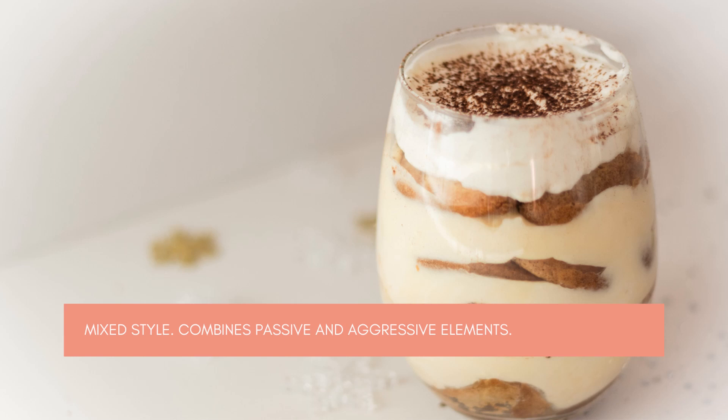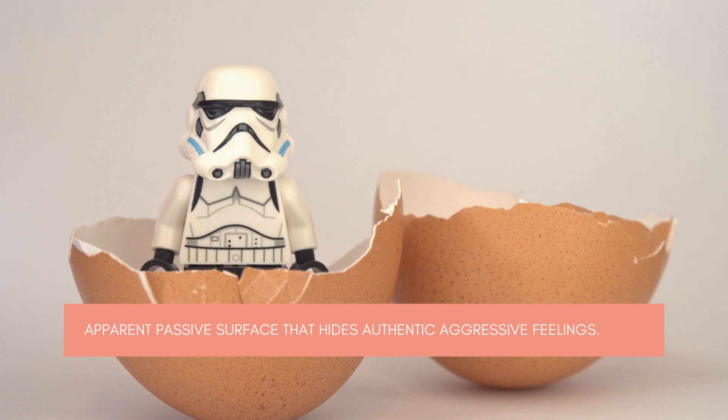This mixed style of communication combines elements from the passive and aggressive styles. The result is an apparent passive surface that is actually an attempt to hide authentic aggressive feelings. The person may experience emotions related to the aggressive style, such as anger, dissatisfaction, or resentment, but wants to avoid the consequences of openly expressing them and the associated opinions.